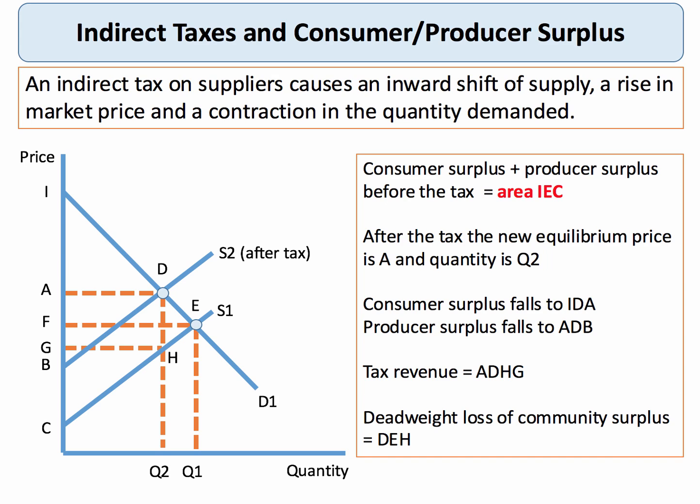If we think about the combined consumer surplus and producer surplus before the tax, it was the area IEC — the area below the demand curve and above the supply curve, a big triangle. After the tax, the new equilibrium price is A and the equilibrium quantity is Q2. So consumer surplus falls from IEF to IDA, and producer surplus falls from CFE to ADB.